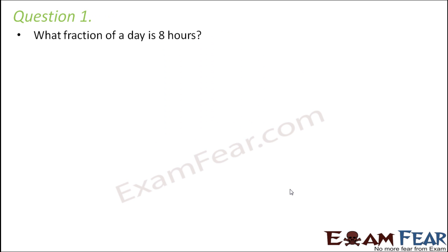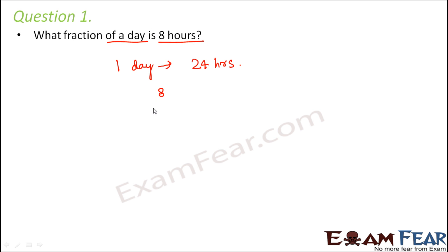Question number one: what fraction of a day is eight hours? One day has 24 hours, so what fraction of one day is eight hours? That means eight hours out of 24 hours, so 8 by 24. Since 8 times 3 is 24, this simplifies to one by three. One third of the day is eight hours.